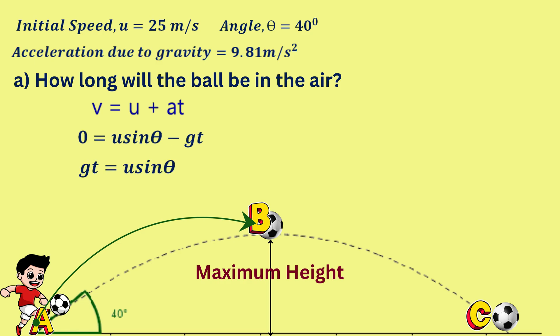Group negative g t on the left to get positive g t. Divide both sides by g and get t equal u sine theta over g.